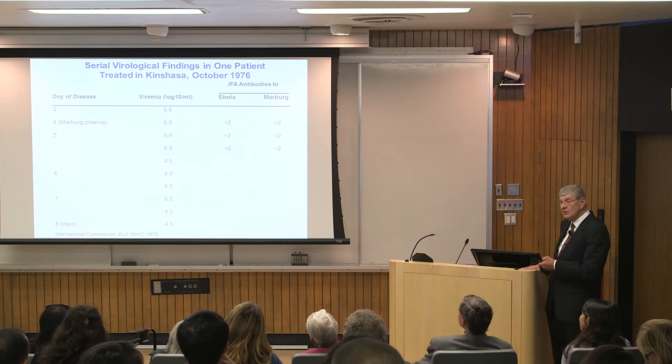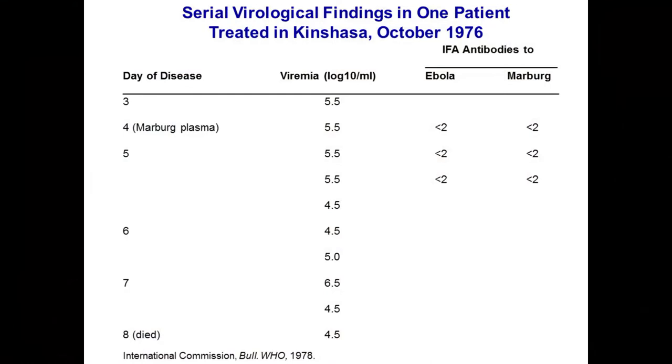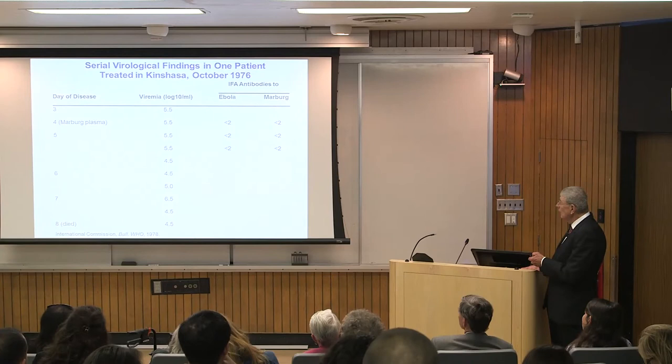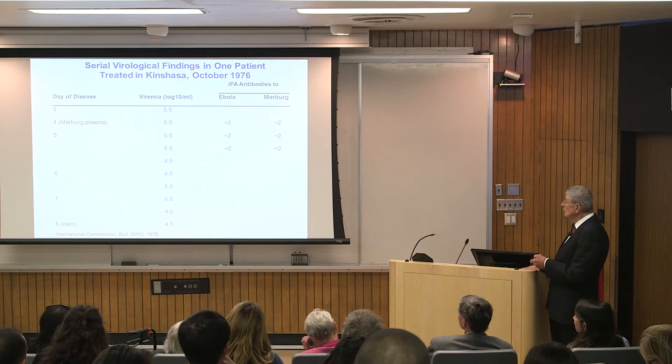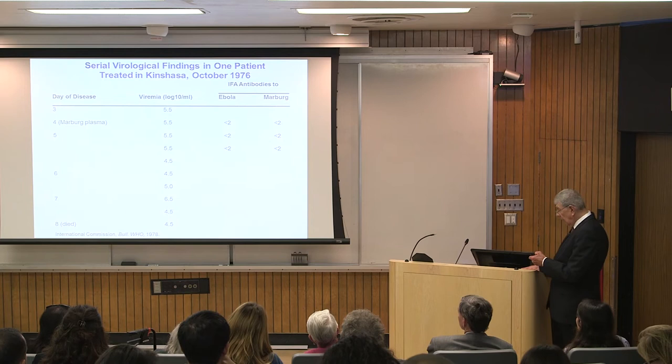We did some virology — only one patient in Kinshasa allowed us to do serial virology. Virtually none of the 20-plus epidemics until recently had virology done. The Zairean nurse's titer between four and six logs of Ebola virus was maintained. She was given Marburg plasma as I mentioned, and she had no antibodies at all to anything.